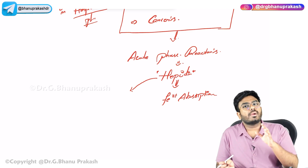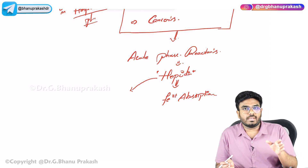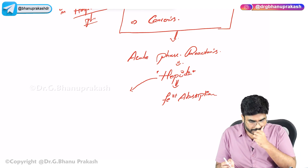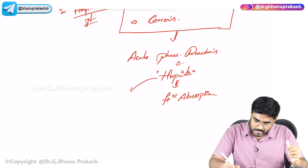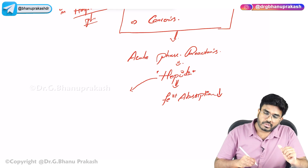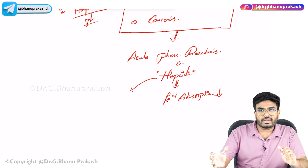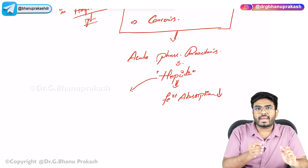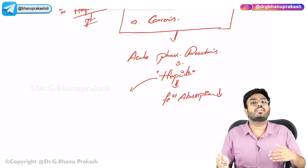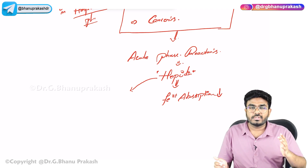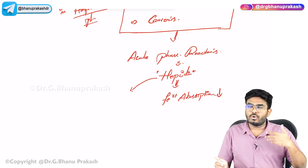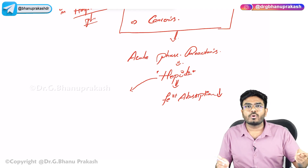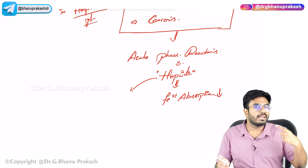Whenever there is a chronic inflammatory condition, iron is not available for hematopoiesis or hemoglobin production. Iron is there in the body but is not available because of hepcidin. So: no iron → no heme → no hemoglobin → anemia.